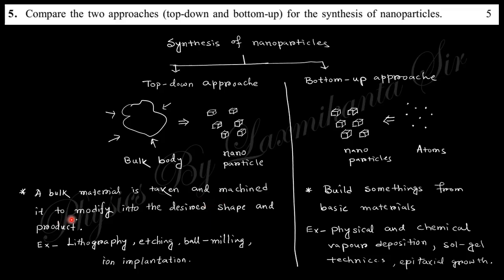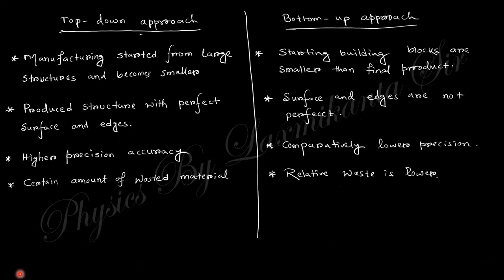A bulk material taken and etched to modify into desired shape is top-down. Building from basic materials is bottom-up. Examples: lithography, etching, ball milling are top-down. Physical and chemical vapor deposition, sol-gel technique, epitaxial growth are bottom-up processes.